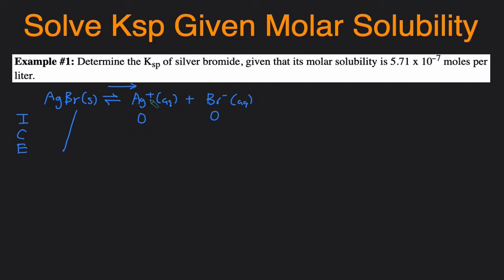The reaction will be proceeding to the right, so the concentration of both of these are increasing. So for our C line, it will be +X and +X, because they both have a coefficient of 1. That's why it's just +X, instead of 2X or 3X. E is the sum of the I and C line. So this would just be X and then X.